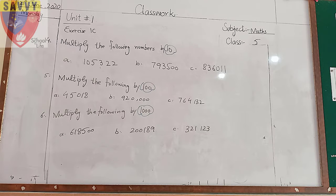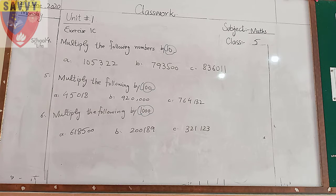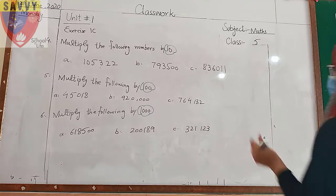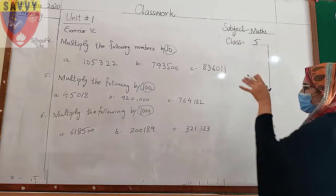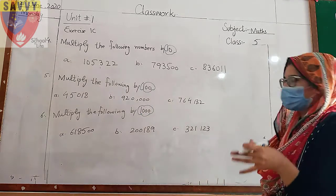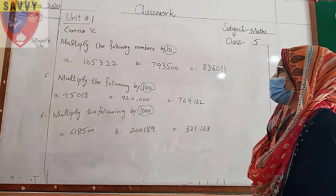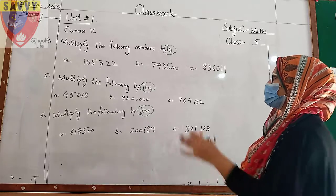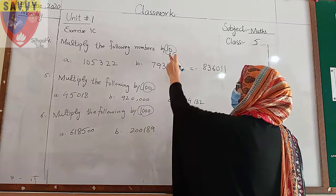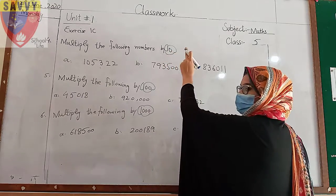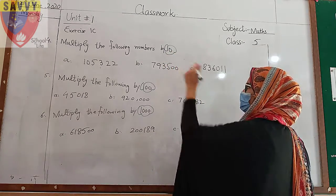Question number 4: Multiply the following numbers by 10. We will multiply this by working through each group. I will tell you this easily — you will multiply by adding zeros. How many zeros do you need to add?